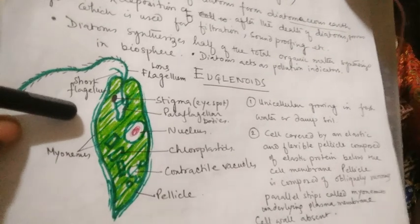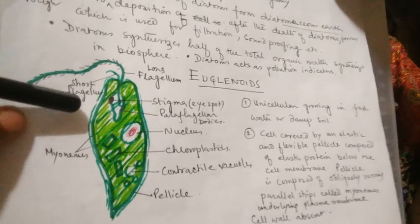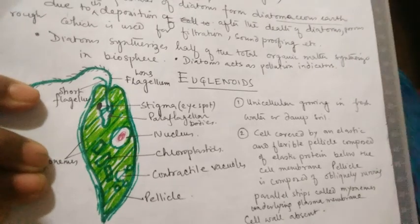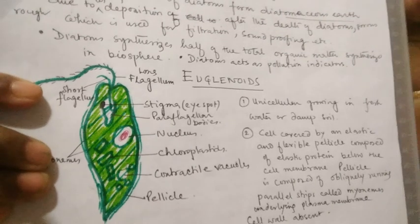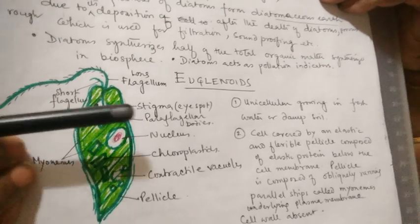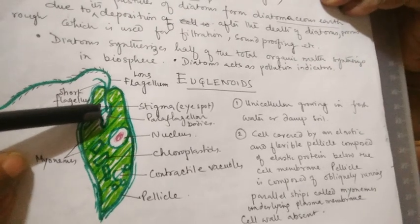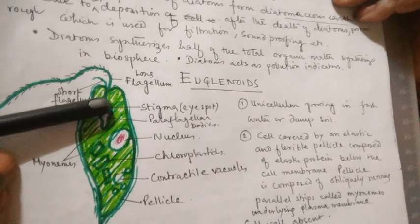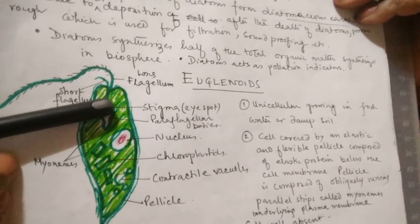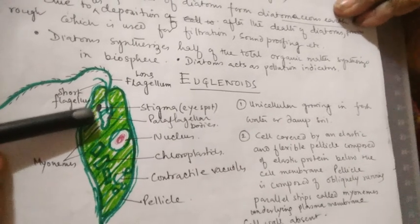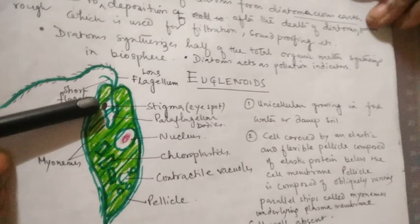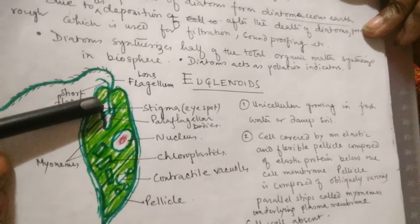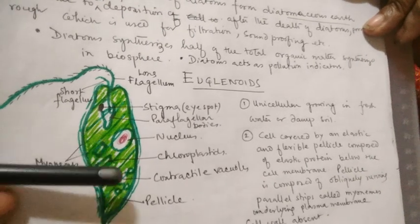There is an eye spot, also called stigma, which is orange to red in color and contains a pigment called astaxanthin.